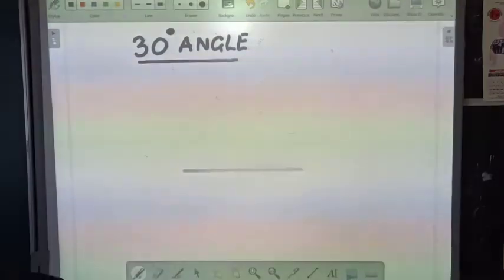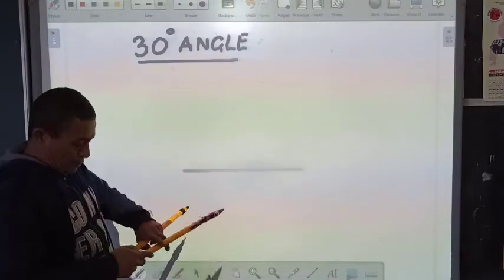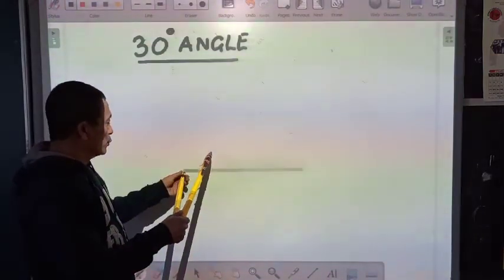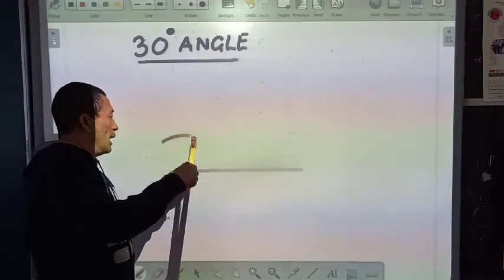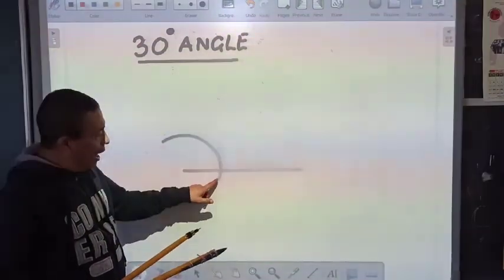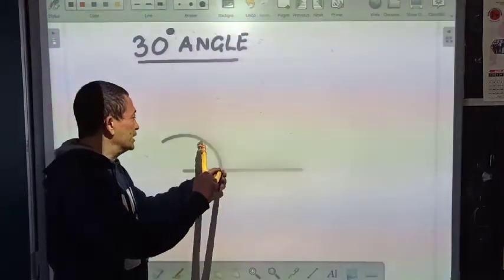Then taking this as our point, we will draw our main arc. So first draw our main arc. Then from where the arc crosses the line, that is this point, we will draw the 60 degree marking.